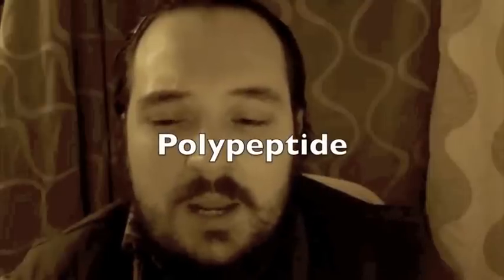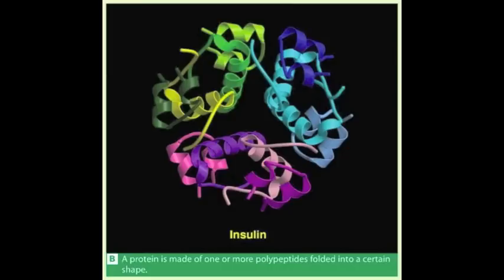A protein is not just a long chain of amino acids. The polypeptide has to be folded into a particular shape to form the protein's working structure. For example, in the hormone insulin, the polypeptide chain is folded into a complicated shape like a ball of string. This is why it is called a globular protein.